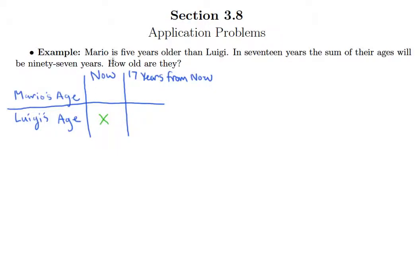Okay, so if Luigi is x, and Mario is five years older than Luigi, well that would be take Luigi's age and add five. So we have expressions for their ages now: x plus five and x.